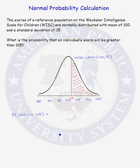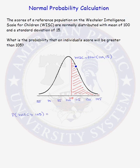We want to know what is the probability that an individual score will be greater than 105. Here we have our normal curve of WISC scores that are normally distributed with mean of 100 and standard deviation of 15. We want to know the probability that a score is greater than 105. The shaded region represents that probability — the area under the curve to the right of 105.